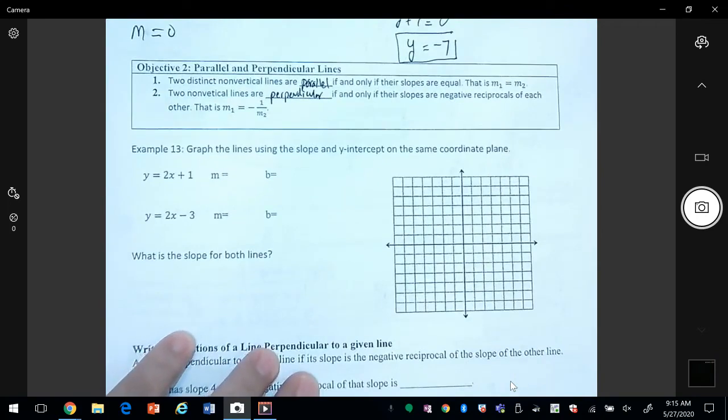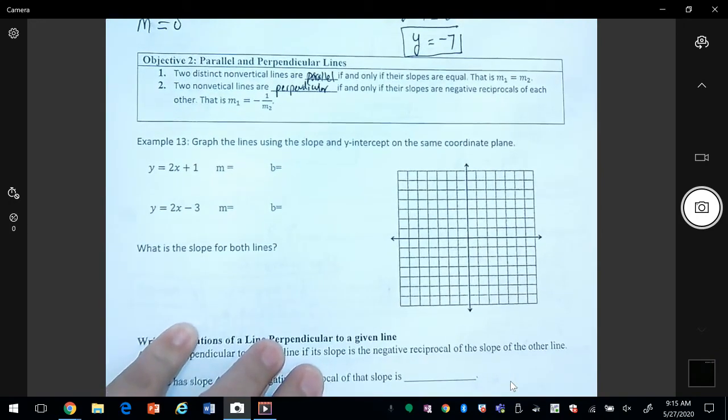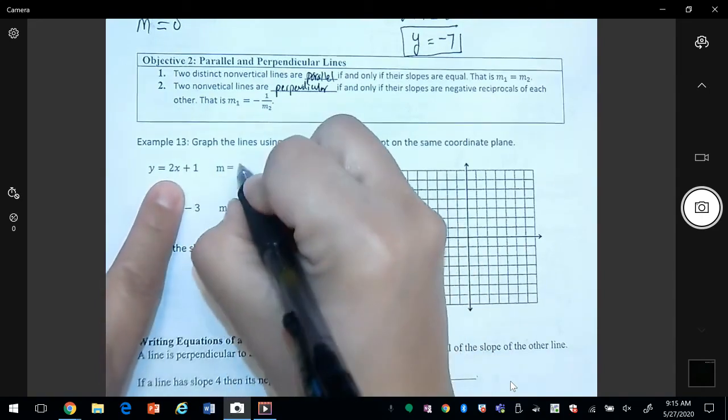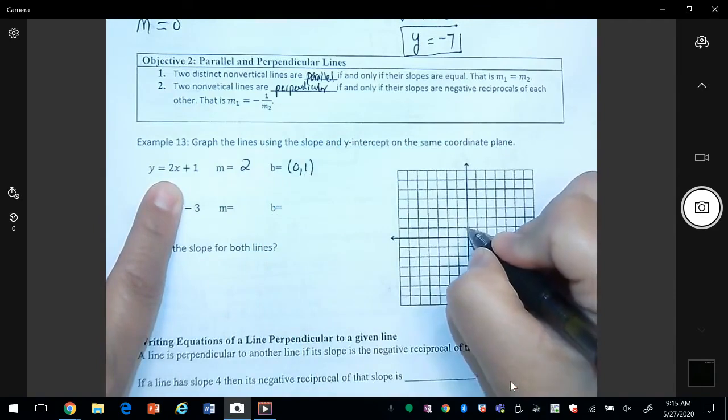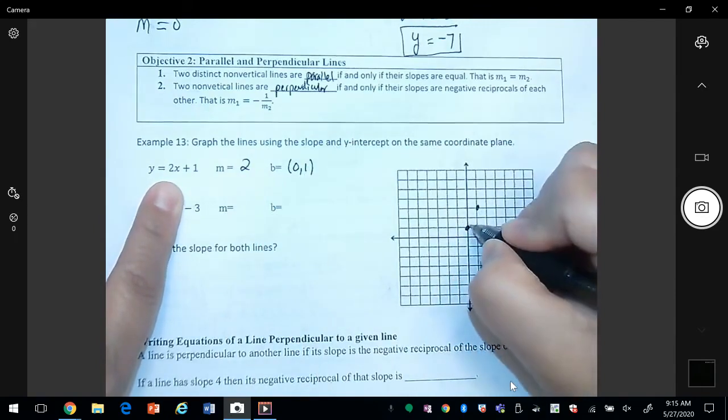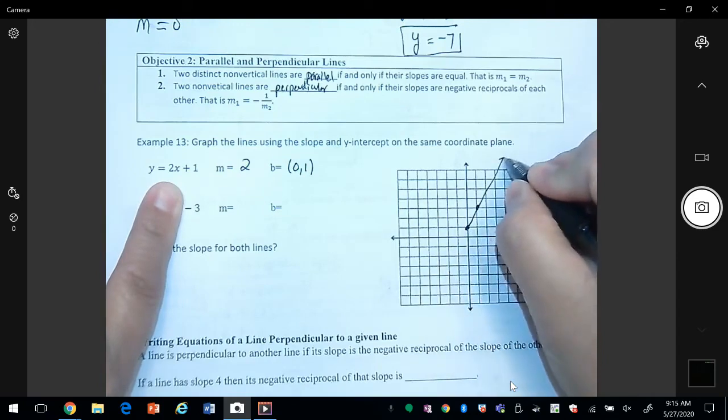Graph the lines using the slope and y-intercept on the same coordinate plane. So here I can see that my slope is two and my y-intercept is one, so I'm going to graph that. Go up two over one, so my line is this right here.